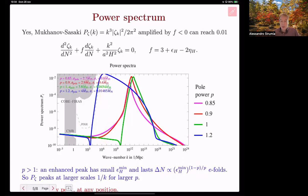On the other hand, if the pole power is smaller than one, one can have an enhancement with essentially no tuning of order 10, and the peak can be at any position with a different shape. Now it's a narrow peak.